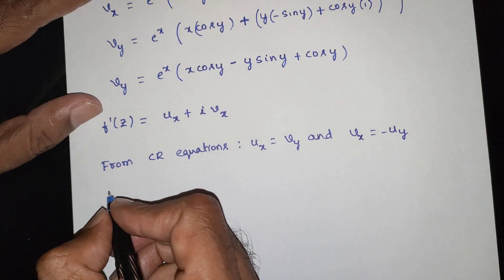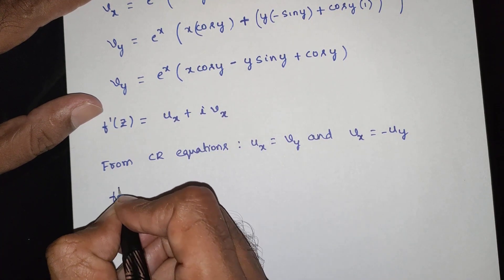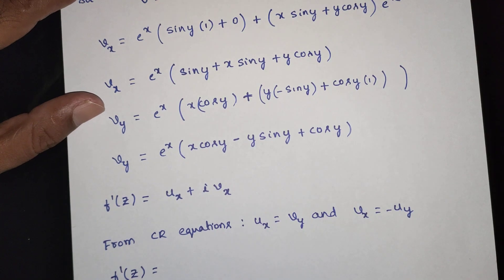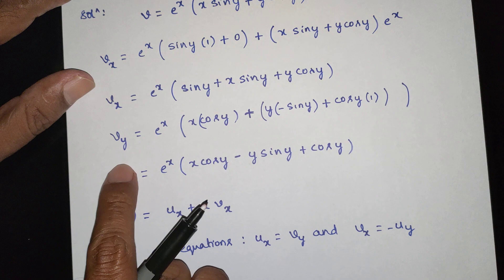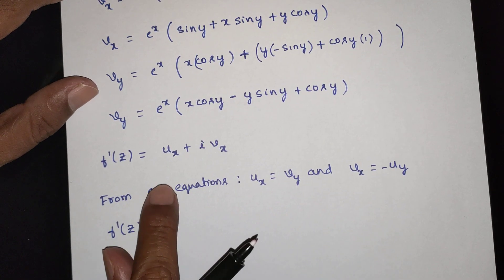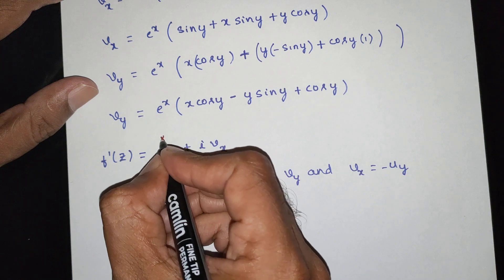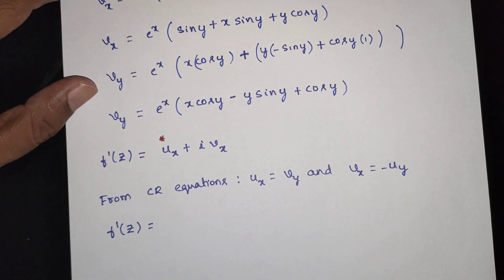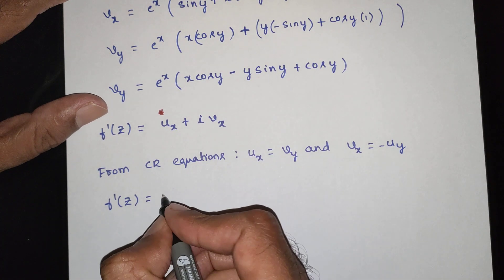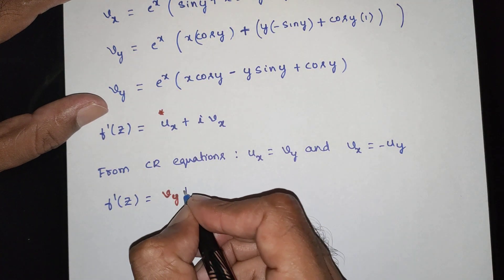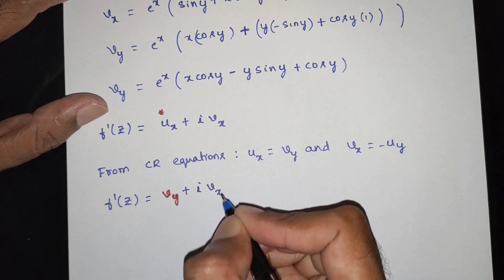We have f dash of z. From CR equations, f dash of z is equal to vy plus i times vx. So we substitute using the Milne-Thomson method.